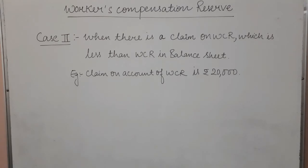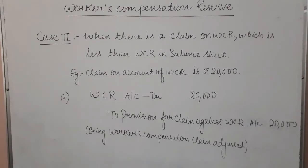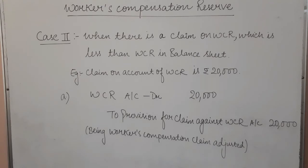In this case, the first entry you will pass is: workers' compensation reserve account debit with Rs. 20,000 to provision for claim against WCR account with Rs. 20,000. This means Rs. 20,000 is transferred from WCR to a newly created account called 'provision for claim against WCR.' The remaining amount — Rs. 60,000 minus Rs. 20,000 equals Rs. 40,000 — will be distributed among the old partners in their old ratio as the second entry.